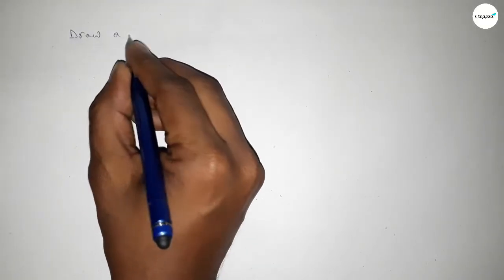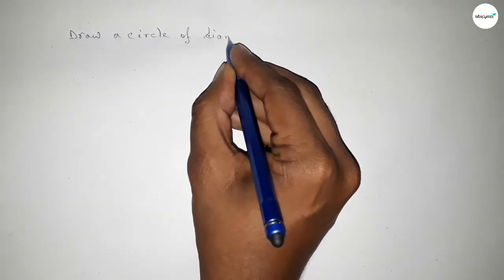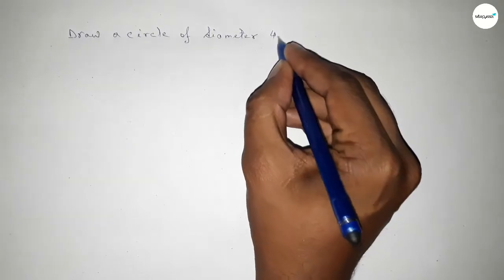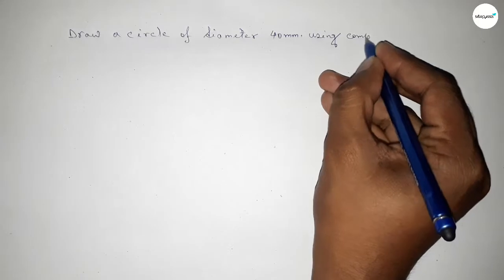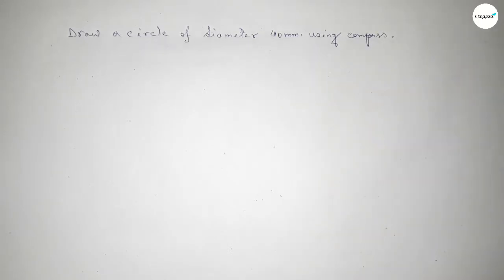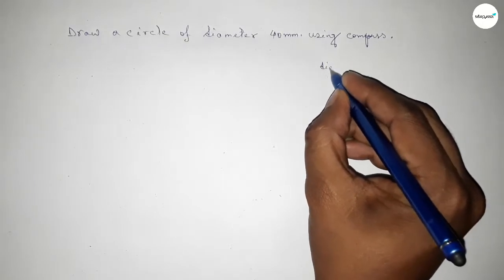Hi everyone, welcome to essay share classes. Today in this video we have to draw a circle of diameter 40 millimeter using a compass in an easy way. So let's start the video. First of all, talking about the diameter of the circle equal to 40mm.